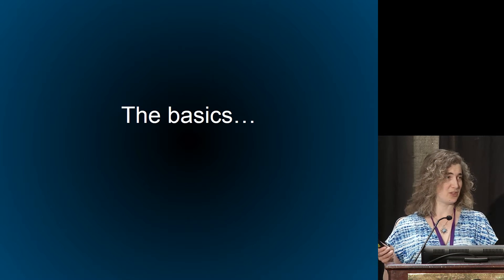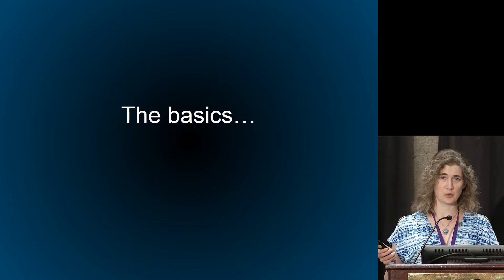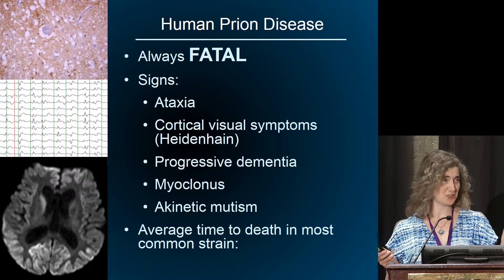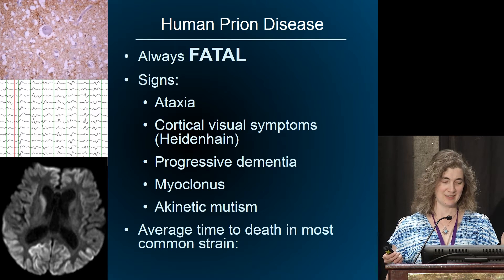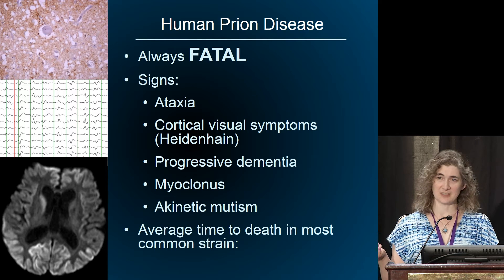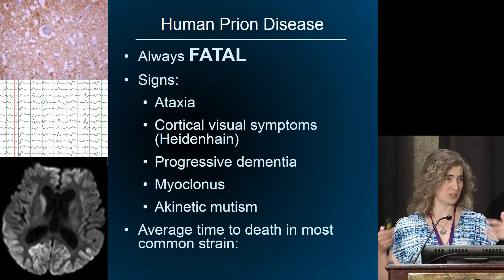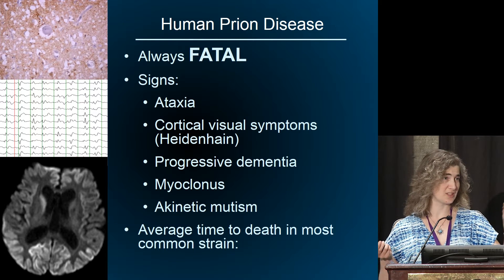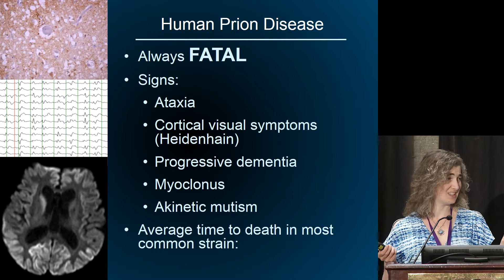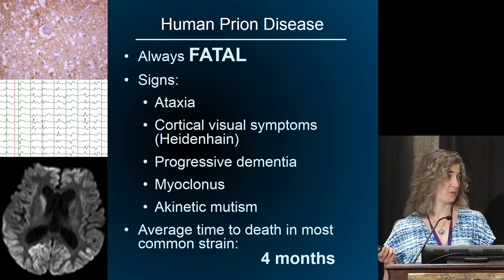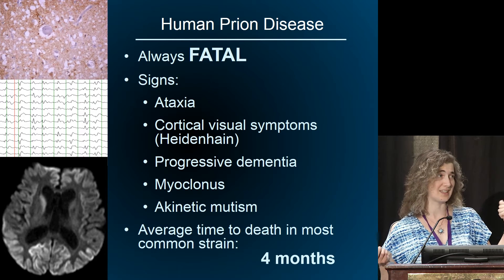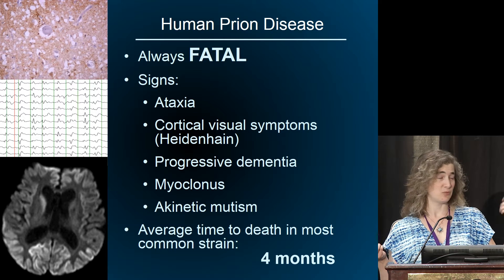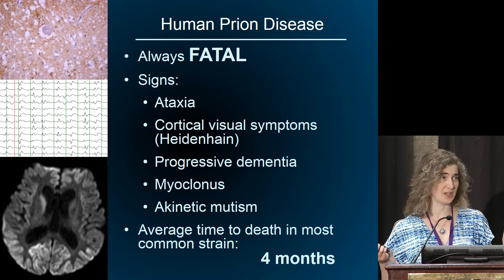You've had a lot of basics so I'll go through this quickly, but unless you understand the basics it's hard to understand the concepts. It's a fatal disease that presents with a variety of symptoms, and it's fast. Looking at different strains, the most common strain can be four months before people pass away. I just had a patient recently — last month — and he was dead in four weeks from the very first time he had a symptom. This is a fast disease.